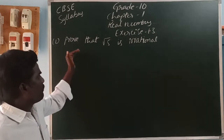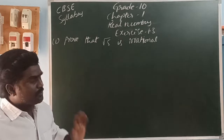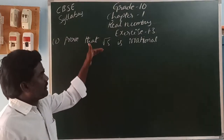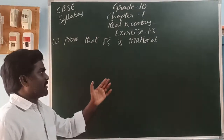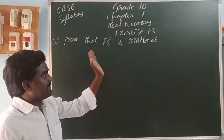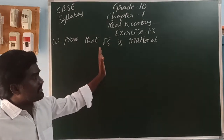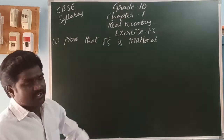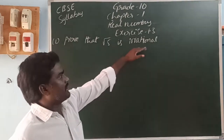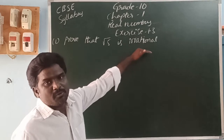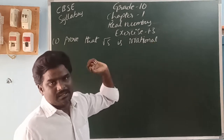Here, what is the statement? Prove that root 5 is an irrational number. So now, let us take root 5 is a rational number, and finally we can show that it is not rational — it is an irrational number. What is called an irrational number? A number that cannot be written in the form of p by q is called an irrational number.